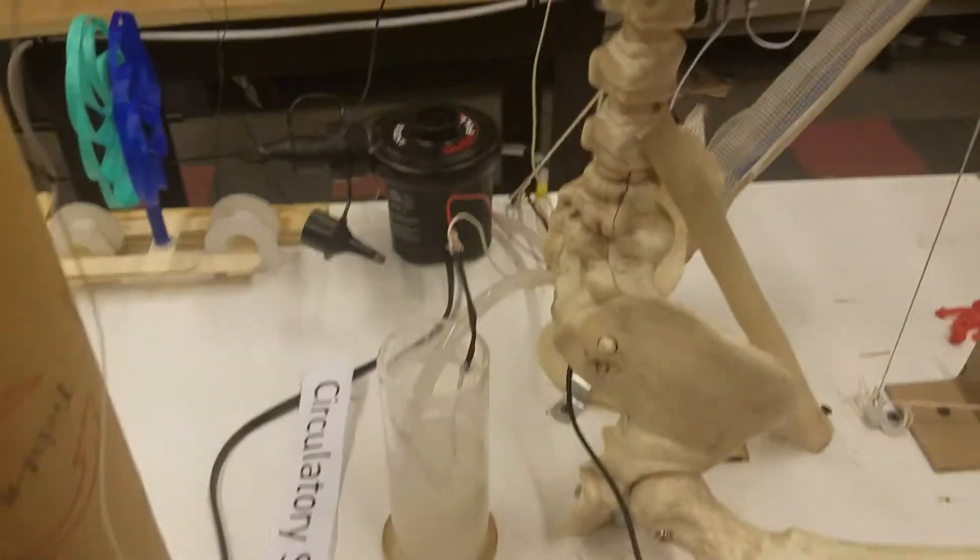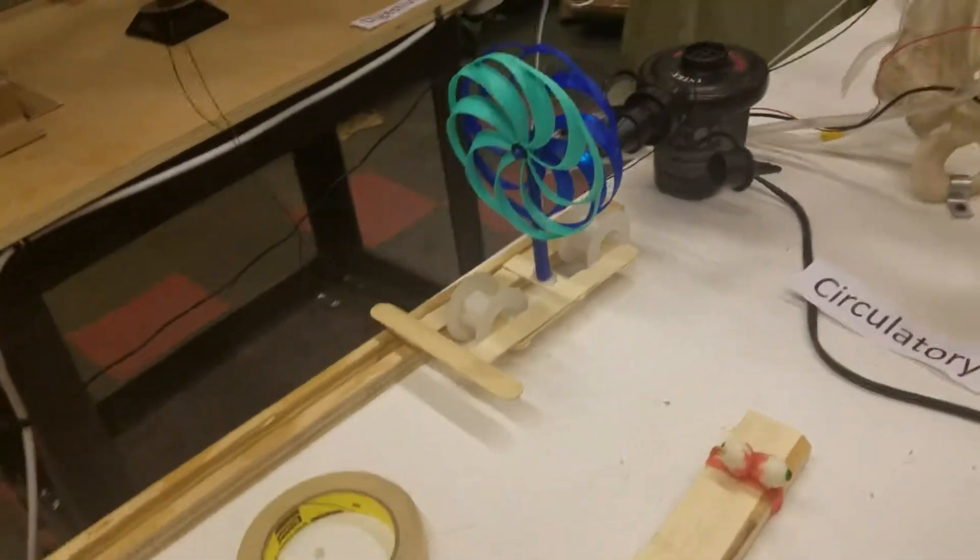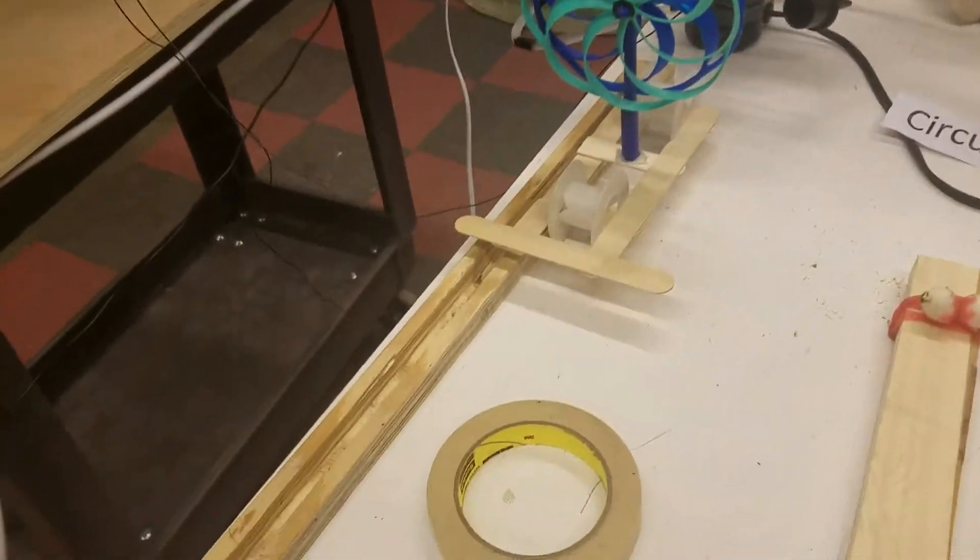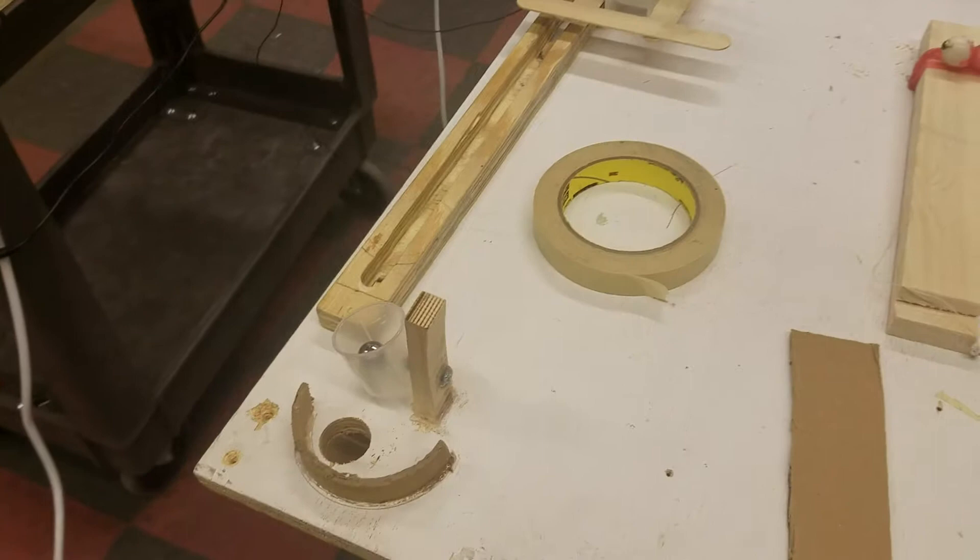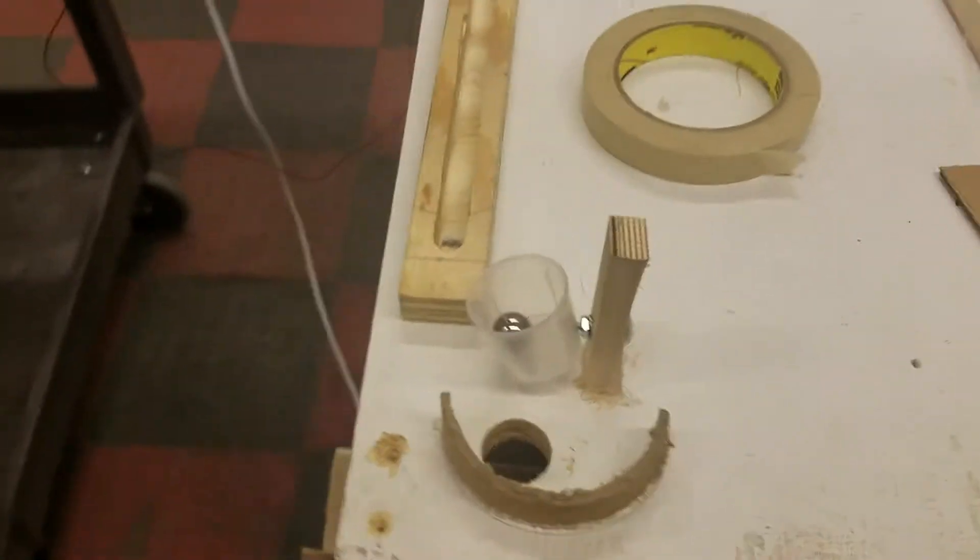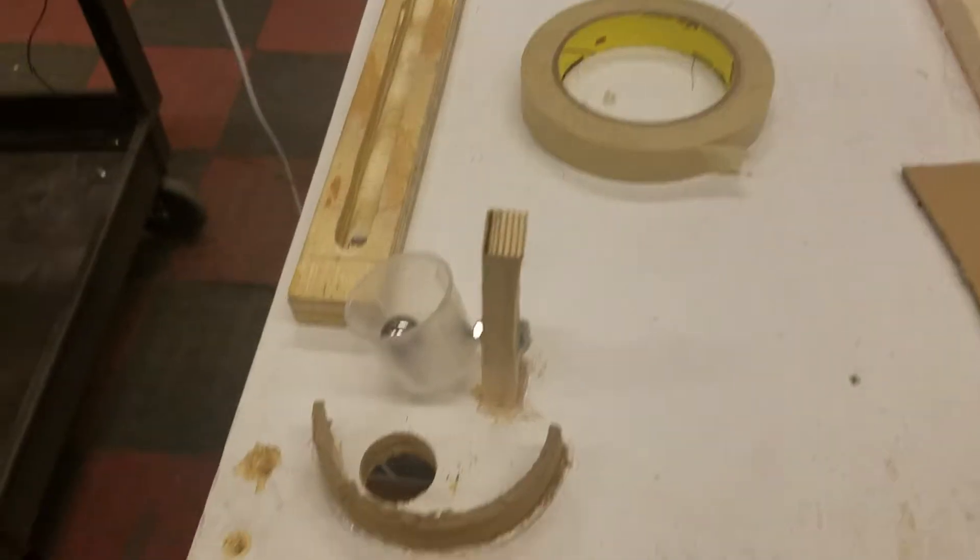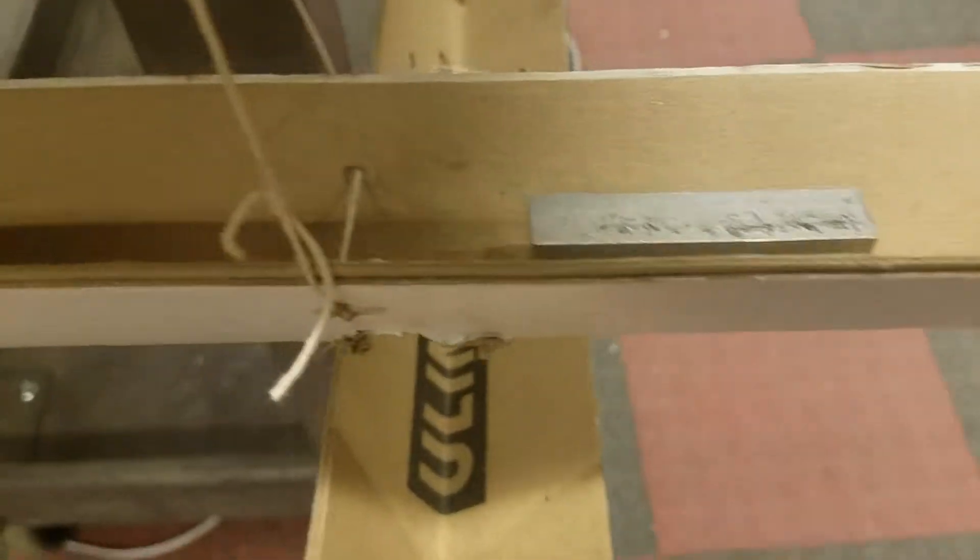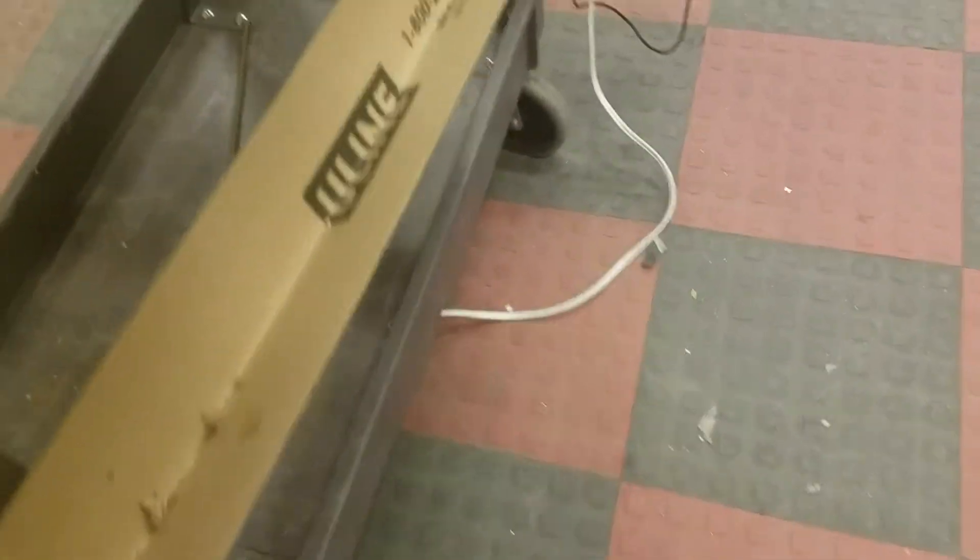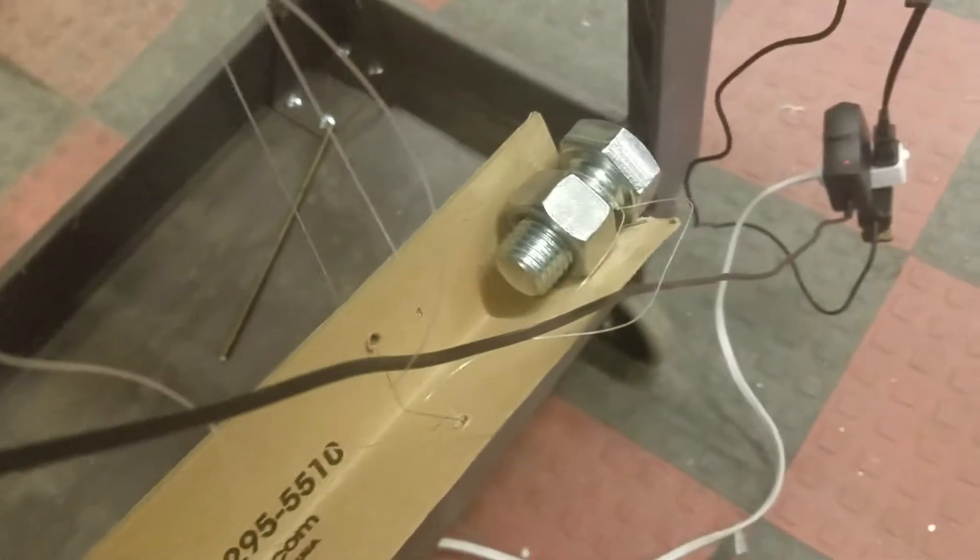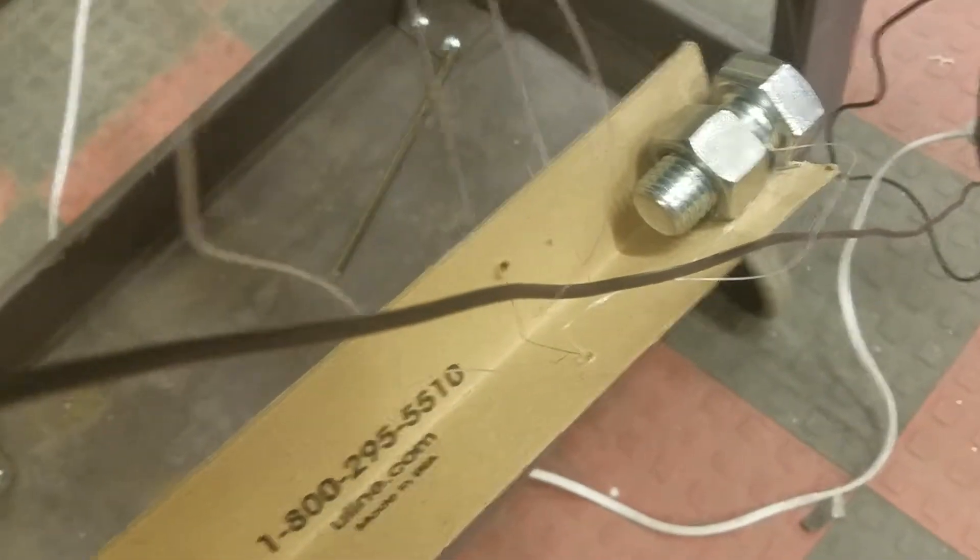Now the ball will fall inside this hole which will go onto this ramp, roll down the ramp and fall into yet another hole which will go into another ramp. It will hit this metal weight which will cause it to fall down.